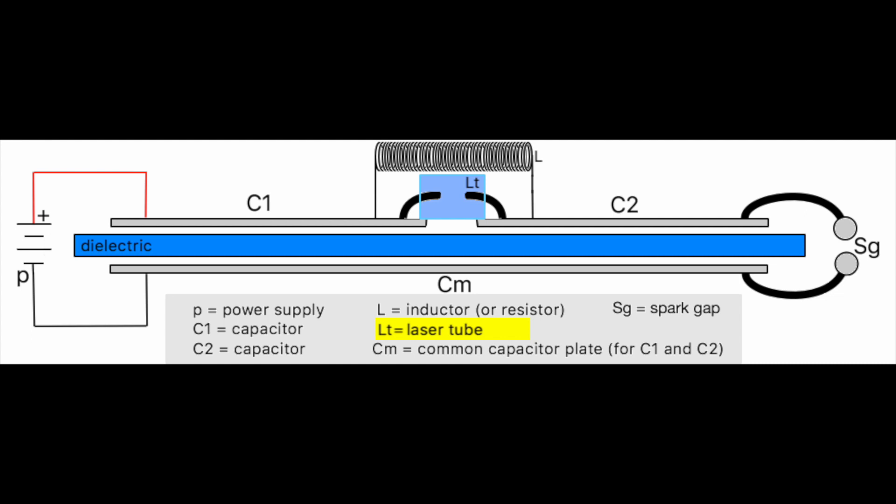Notice that the electrode channel is now occupied by a laser tube instead of an open channel. The laser tube is generally a rectangular shaped box with windows through which the output beam escapes. Although super radiant like its TEA cousin,